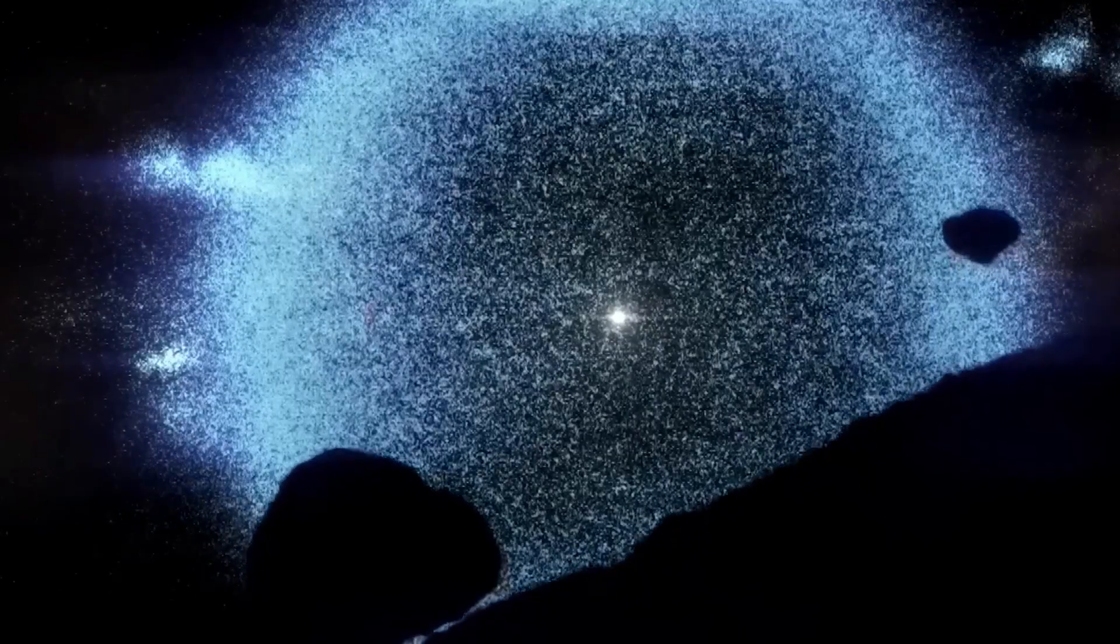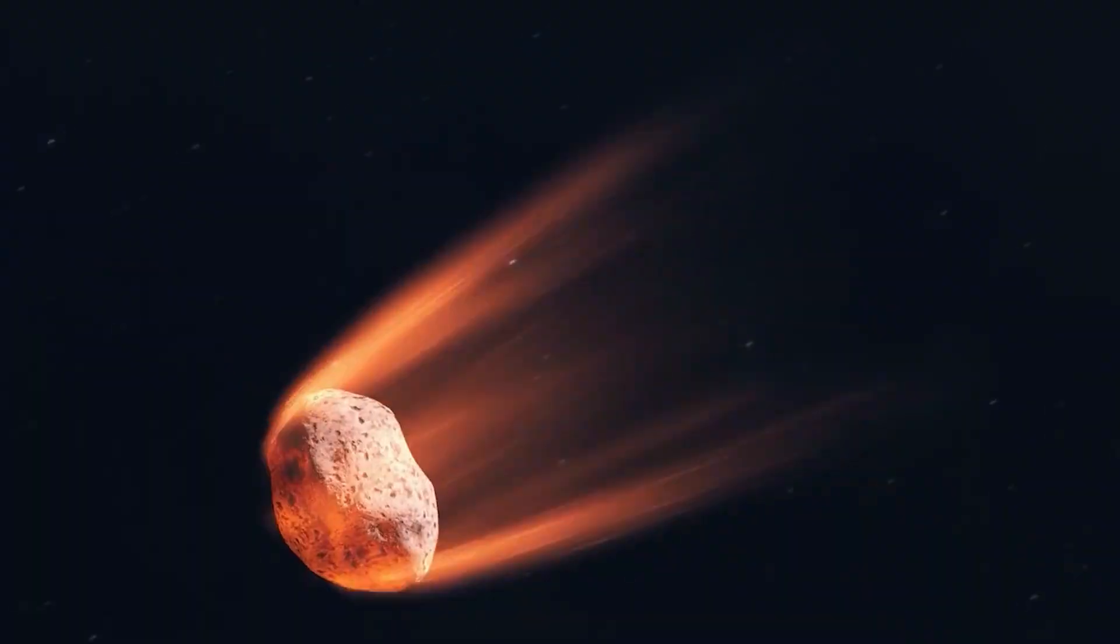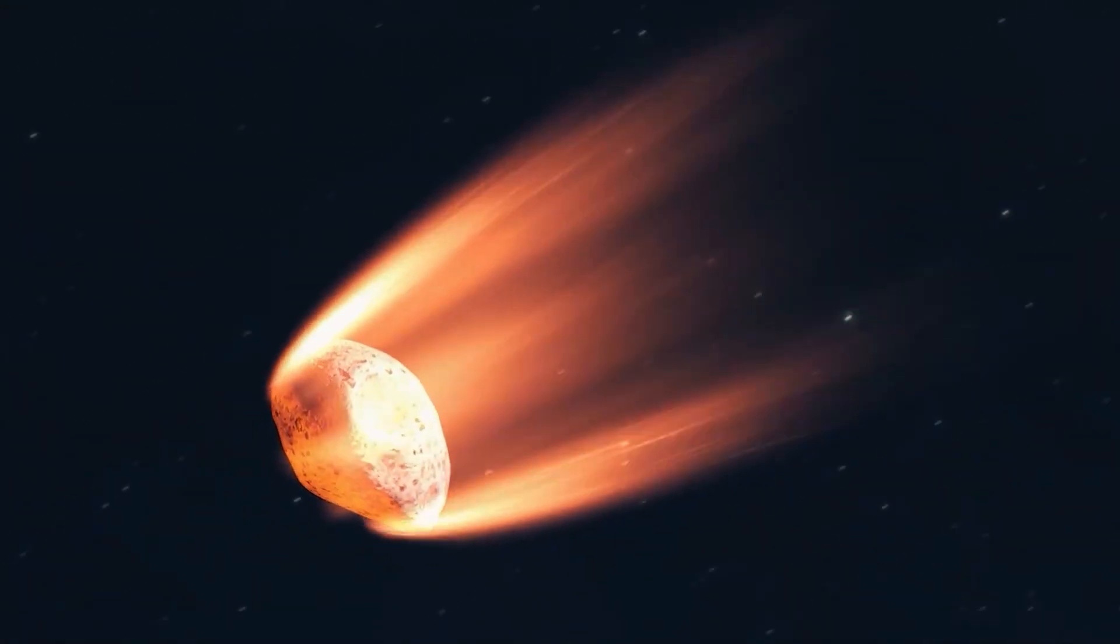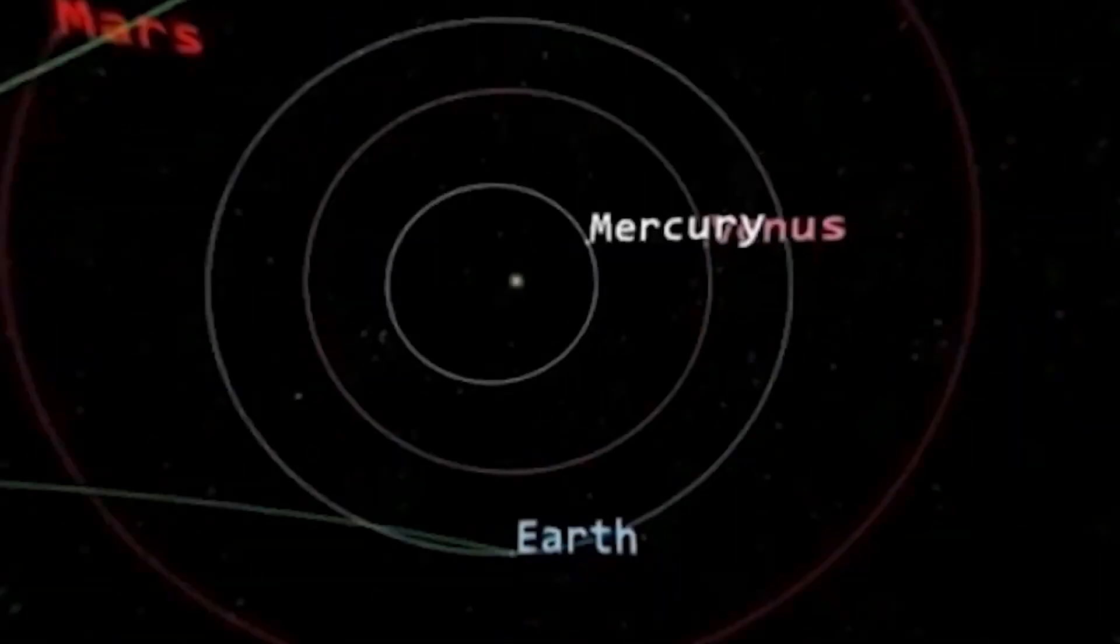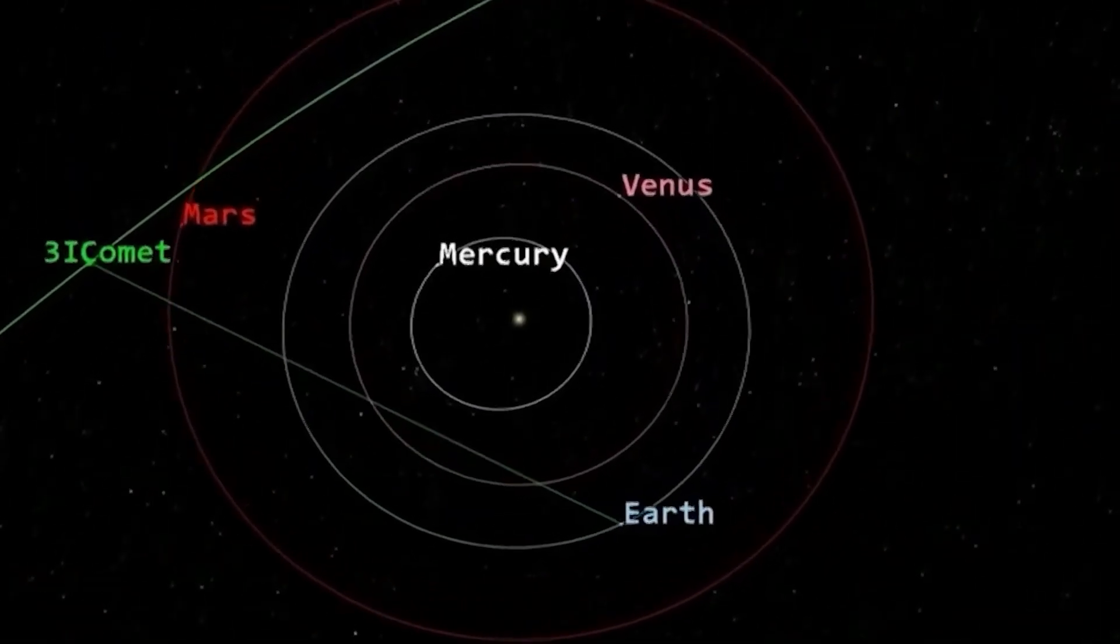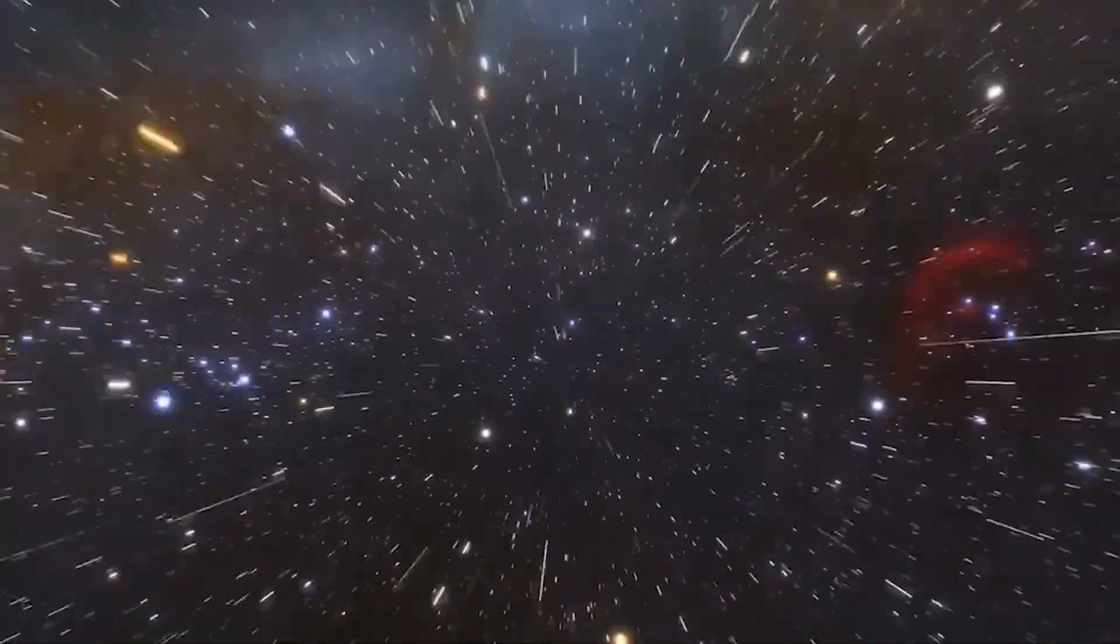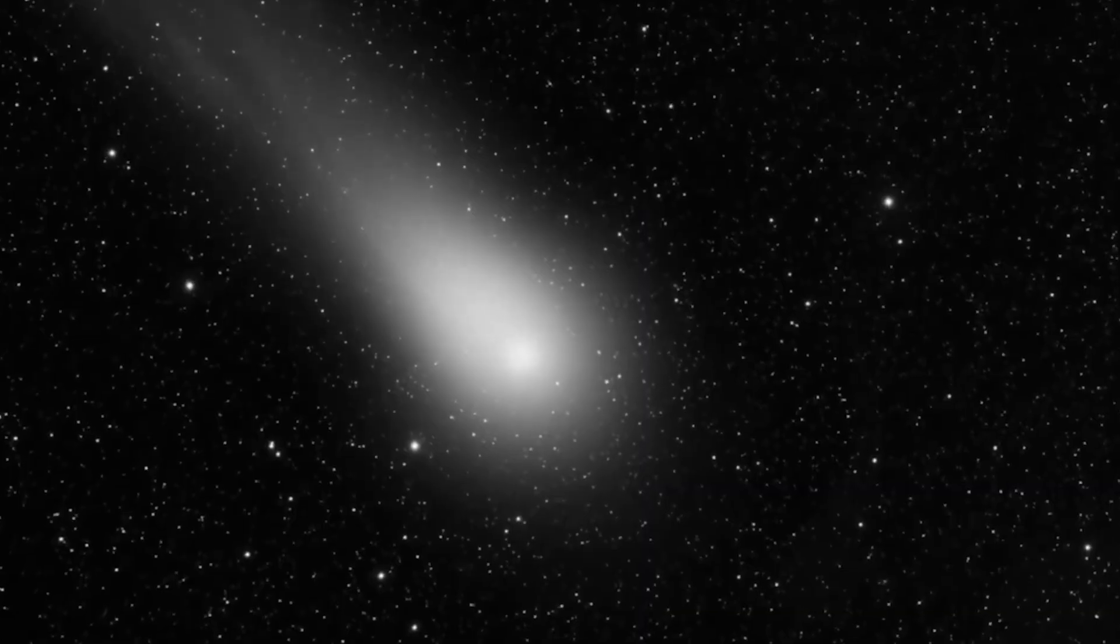In nature, very few mechanisms can cause a space object to produce its own light. Radioactive decay from heavy elements could create a glow, but finding enough radioactive material in interstellar space would be extraordinarily unlikely. Thermal emission from internal heat sources is another option, but maintaining those temperatures would require an ongoing energy source. Or, and this is where things get genuinely unsettling, the illumination could be artificial.